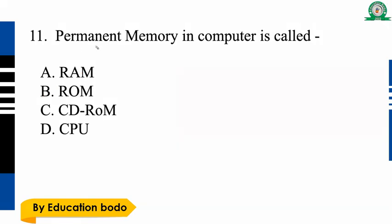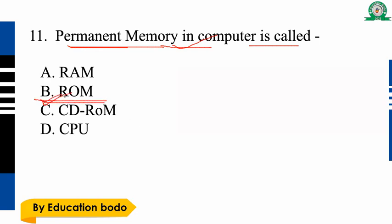Question number eleven: Permanent memory in a computer is called what? Option B is the right answer — ROM. Computer permanent memory is ROM. Option B is the right answer.